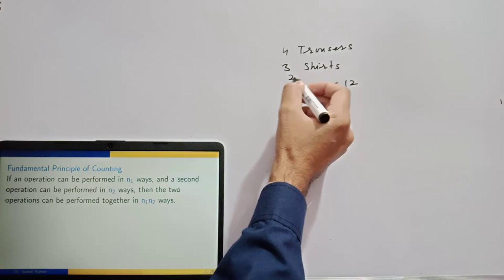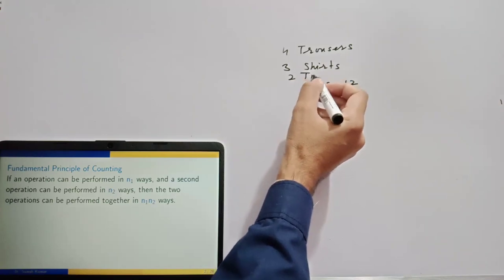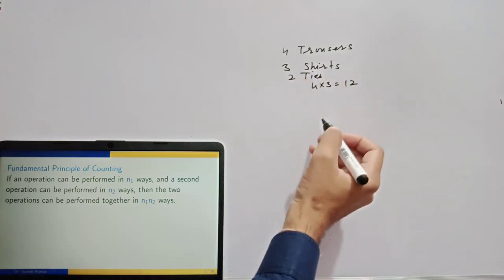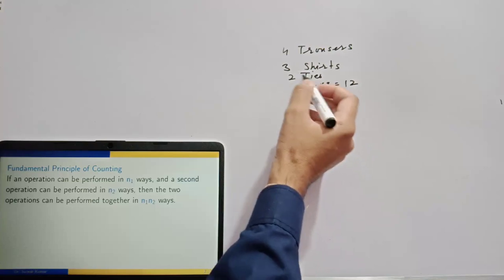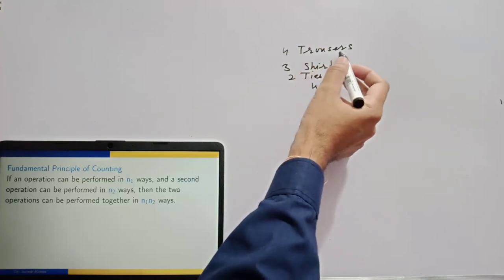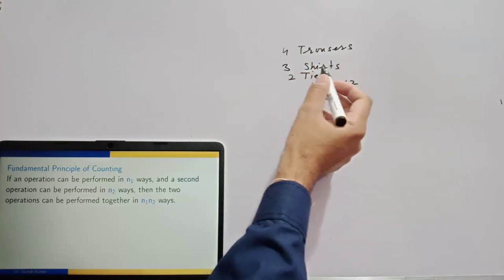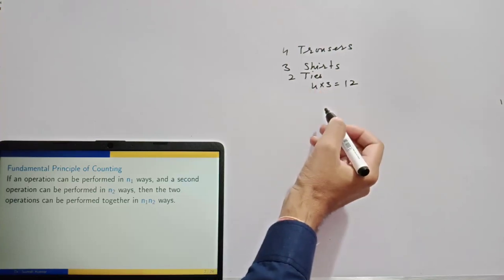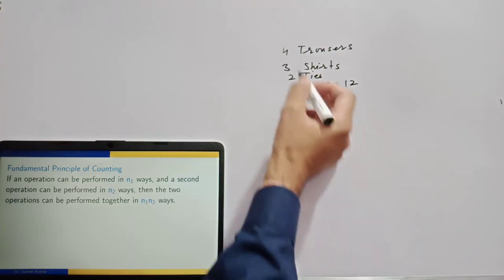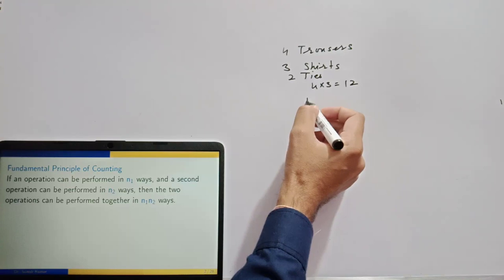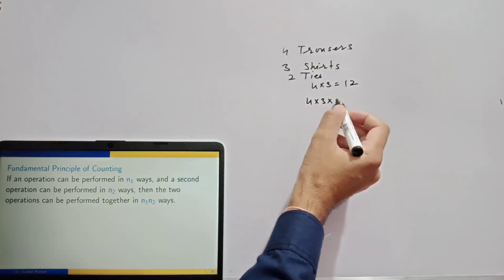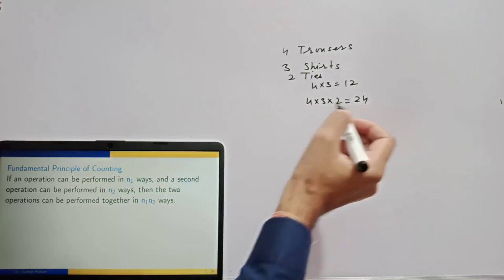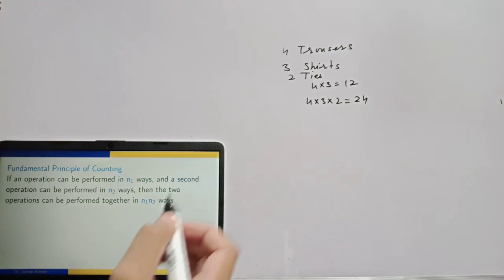Suppose you also have two ties, all different. Then how many different dresses from these three — four trousers, three shirts, two ties, all different? Four into three into two. So this is the Fundamental Principle of Counting.